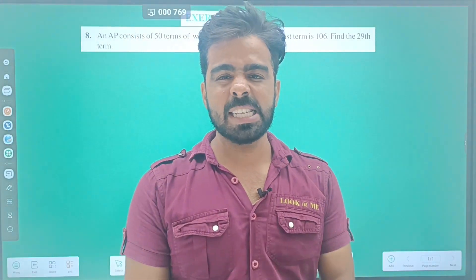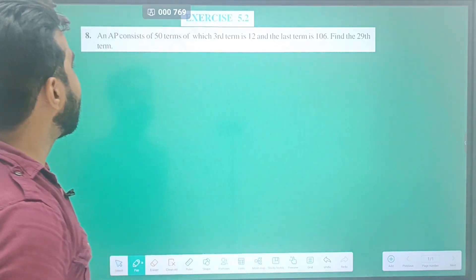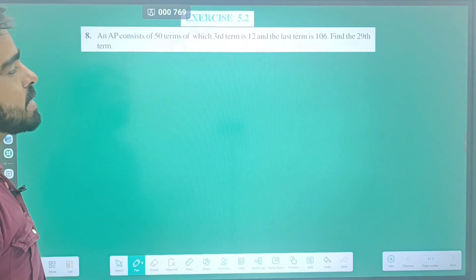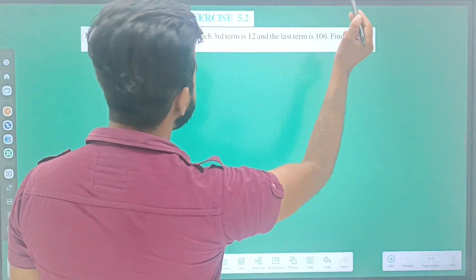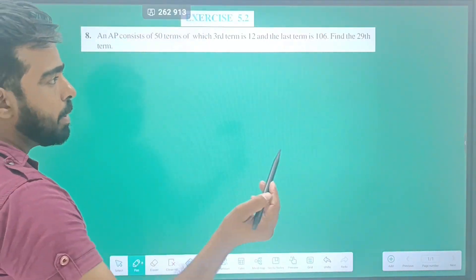Hello and welcome again for exercise 5.2 question number 8. An AP consists of 50 terms of which the 3rd term is 12 and the last term is 106. Find the 29th term.